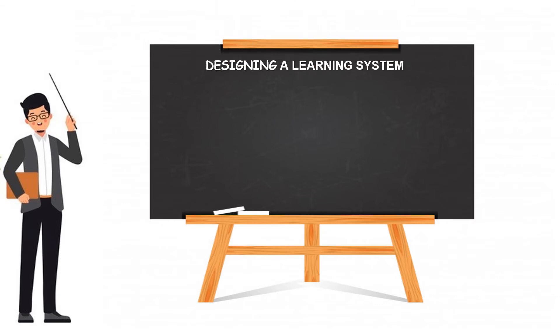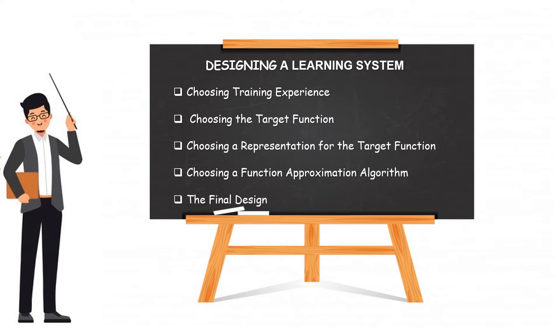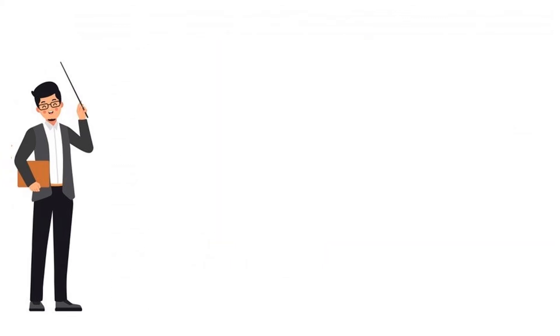Two: designing a learning system. In this there are five keynotes: one, choosing training experience; two, choosing the target function; three, choosing a representation for the target function; four, choosing a function approximation algorithm; five, the final design.